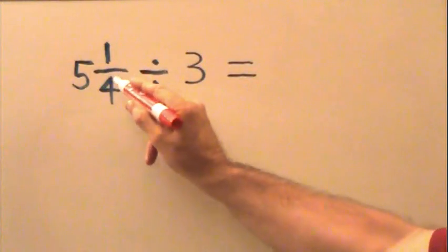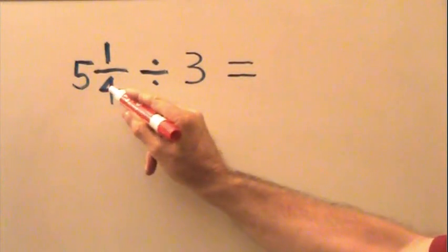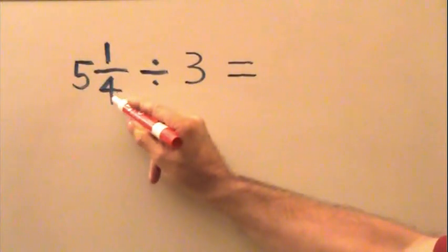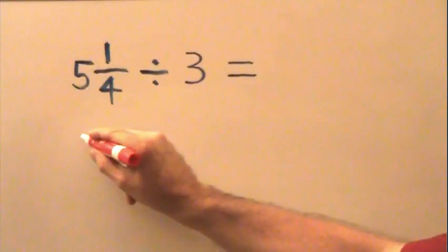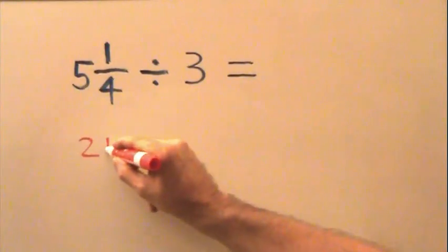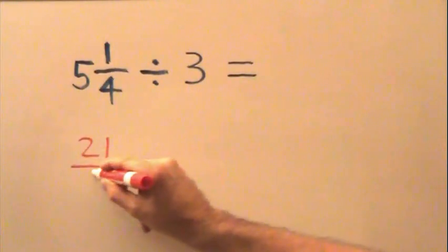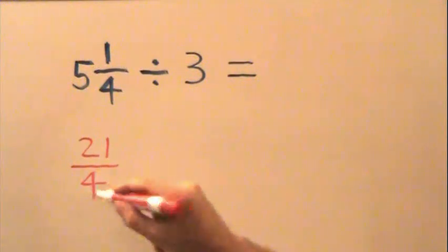We're going to change the mixed number into an improper fraction by taking our denominator of 4, multiplying it by 5 to get 20, adding our 1 to get 21, and we keep our denominator of 4 so we have 21 fourths.